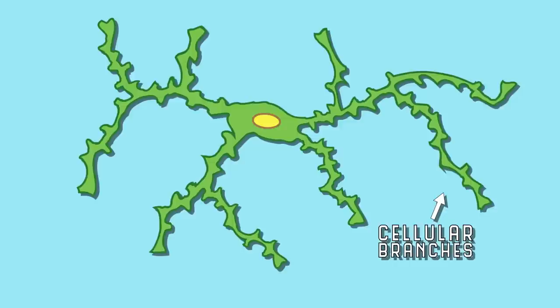Resting microglia have a small cell body that stays in one place, while long, thin cellular branches project out and move around, monitoring the surrounding area. Kind of like the arms in the matrix.